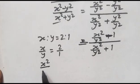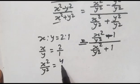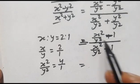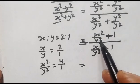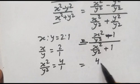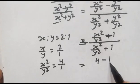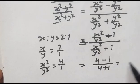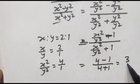Squaring both sides, x squared over y squared will be equal to 4 over 1. So here in place of x squared over y squared we can write 4, giving us 4 minus 1 over 4 plus 1, which is 3 over 5.